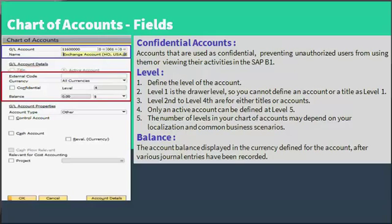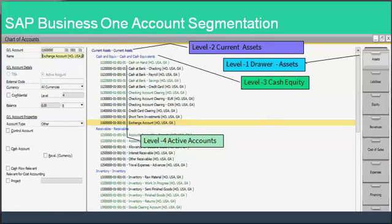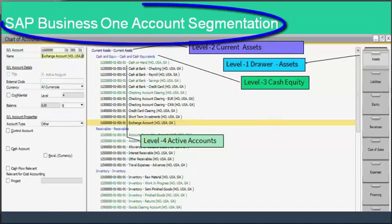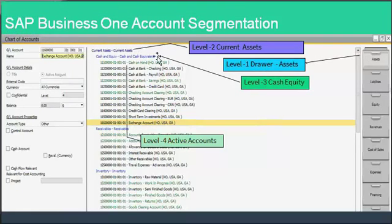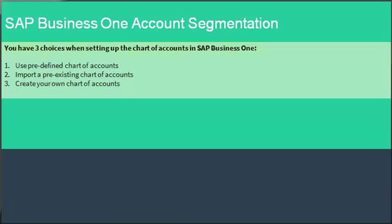Balance refers to the account balance displayed in the currency defined for the account after various journal entries have been recorded. In SAP Business One account segmentation, level one is the drawer; the asset level two is current assets shown in dark blue; level three is in light blue, representing cash equity; and level four shows the active accounts in green.